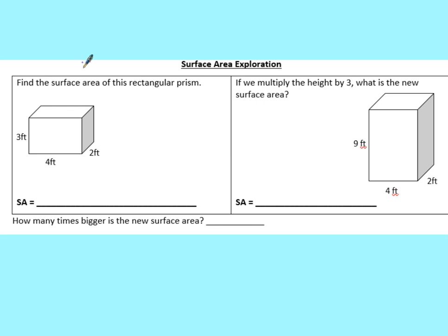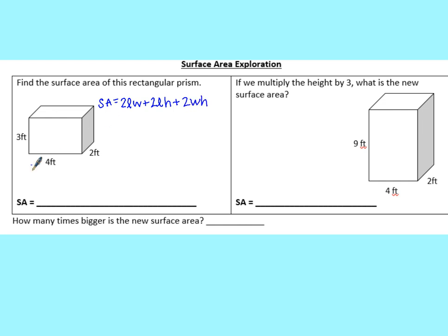Now that we've explored volume, we're going to take a look at the surface area exploration for rectangular prisms. To find the surface area, remember the formula is SA = 2(length × width) + 2(length × height) + 2(width × height). Our length is 4, our width is 2, and the height is 3.